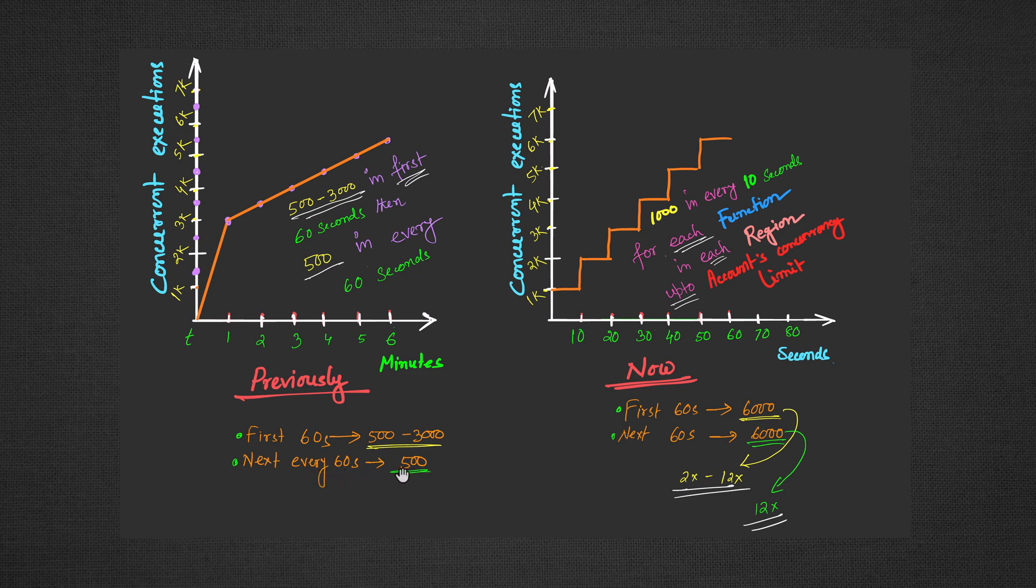Following the first minute, the previous rate was an increase of 500 concurrent executions every 60 seconds, now it is 6000. This translates to 12 times speed increase in the following minutes.